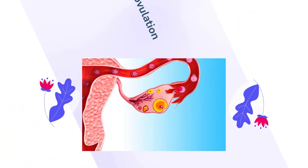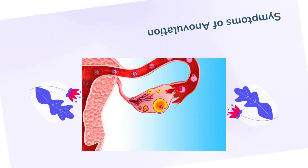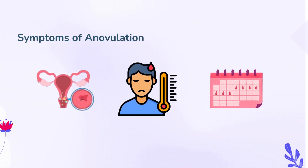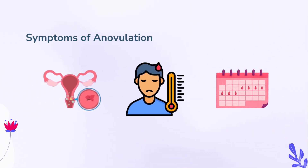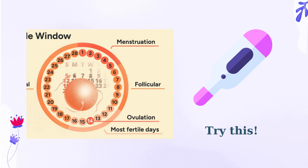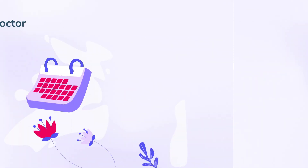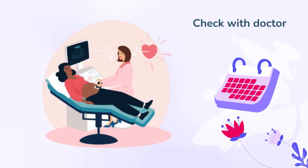Women who ovulate regularly often see signs that occur during each cycle. They may experience increased amounts of cervical mucus, a drop then subsequent rise in resting body temperature in the middle of the menstrual cycle around day 10–16, and periods that occur regularly. Women with very irregular periods, or who do not see signs of ovulation, may wish to try an over-the-counter ovulation predictor kit. These kits measure levels of hormones in a woman's urine to determine when she is ovulating. A doctor may also be able to test a woman's hormone levels or carry out an ultrasound scan to view the ovaries.